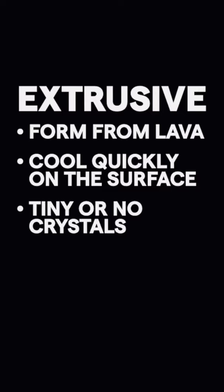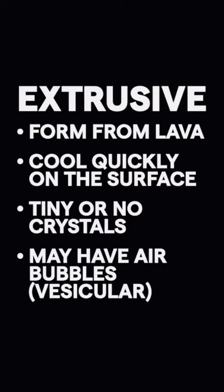But then we also have extrusive igneous rocks. These form from lava on the surface of the earth, where they cool quickly. As a result, there are tiny crystals or maybe even none at all, and you may actually see trapped air bubbles, giving it a vesicular texture.